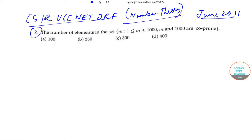The question that we'll be solving today is: the number of elements in the set where 1 ≤ m ≤ 1000, and m and 1000 are co-prime. So this is the set that we have been given. The options are (a) 100, (b) 250, (c) 300, and (d) 400. So we have to find the number of elements in the set.